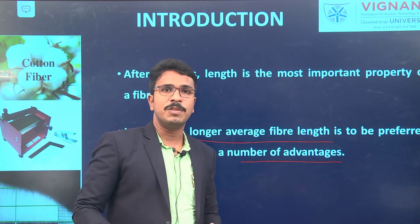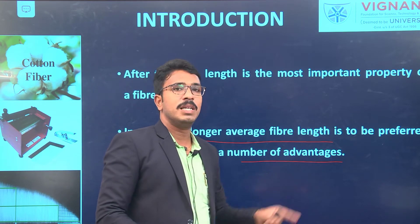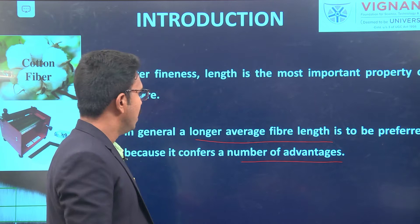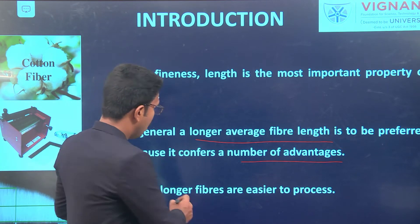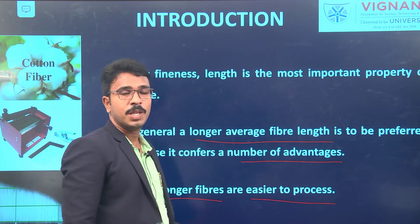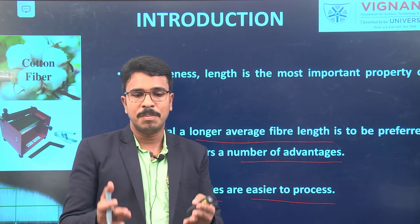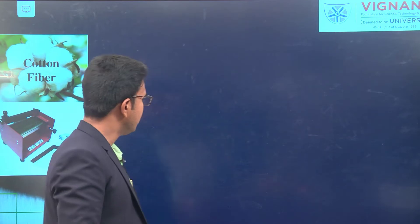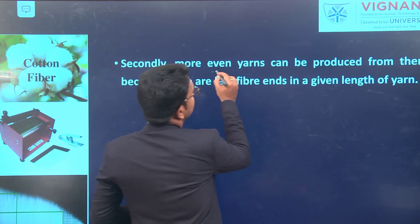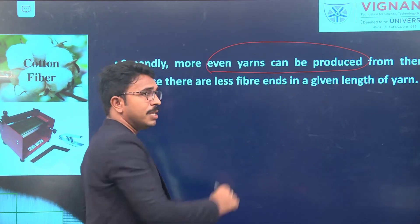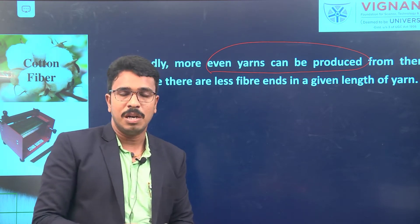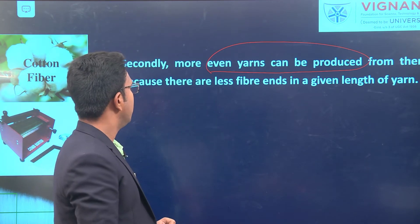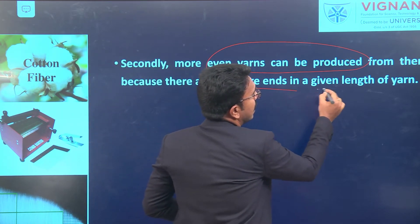When making yarn, a longer average fiber length is very much preferred. First, longer fibers are easier to process in spinning. Second, more even yarns can be produced — if fiber length is long, we get more evenness and fewer imperfections in the yarn, because there are fewer fiber ends in a given length of yarn.